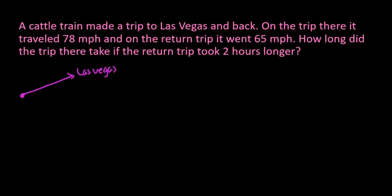It tells us how fast they're traveling both directions. So the thing that is important to understand here is that the distance there, the distance to Las Vegas, is equal to the distance back.